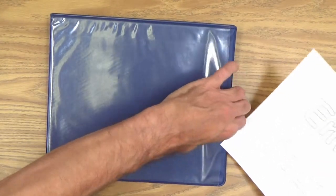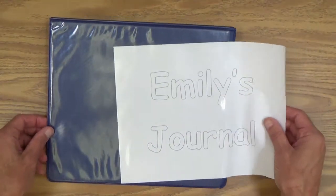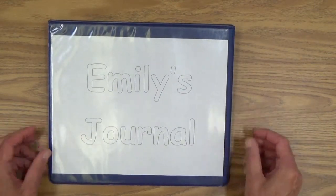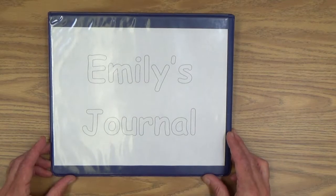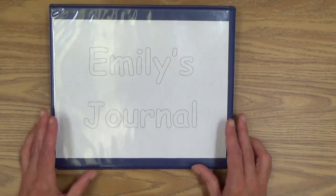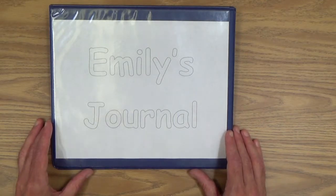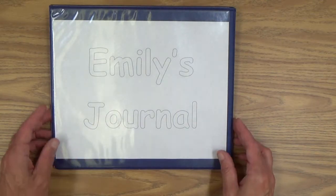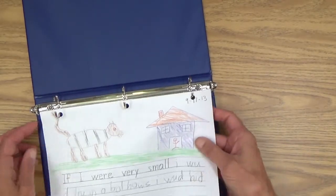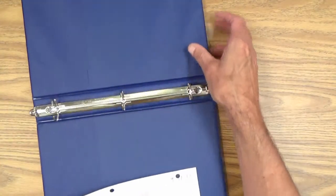So, you can install that. This is, of course, a view binder. So, it goes right under the plastic here. And there you have it. Emily's journal. And of course, like I said, there are many options for the cover also. So, I'm going to put this out of the way right now. Take our page back out.